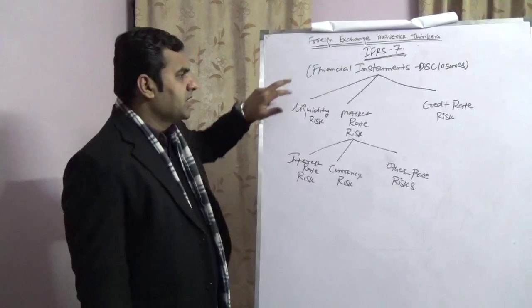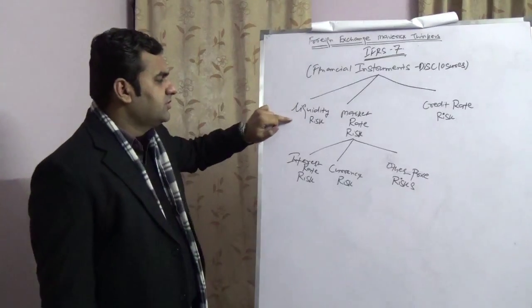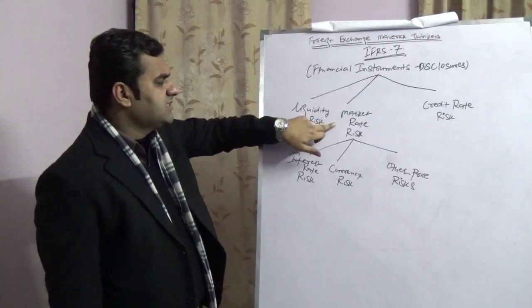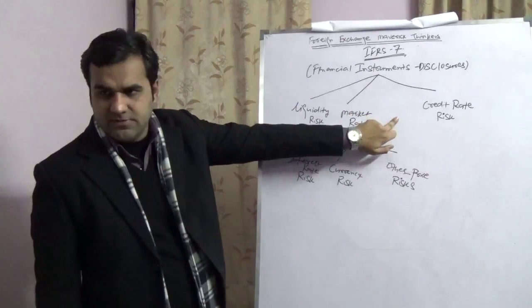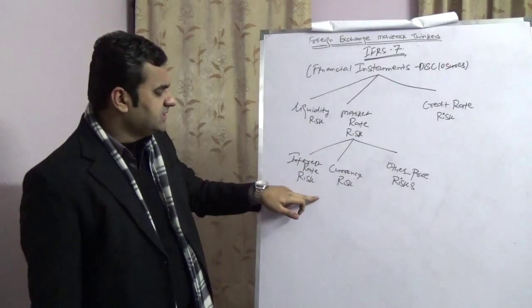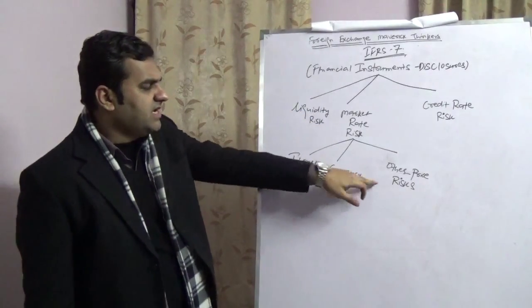IFRS 7 says the financial instrument disclosure—basically the risk could be categorized into three parts. One is liquidity risk, another is market risk, and the third is credit risk. Now, market risk could be further categorized into three parts: interest rate risk, currency risk, and other price risk.